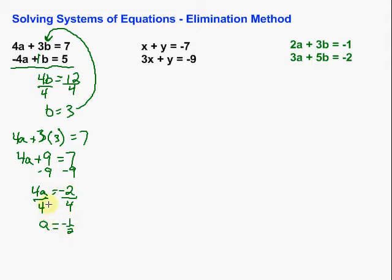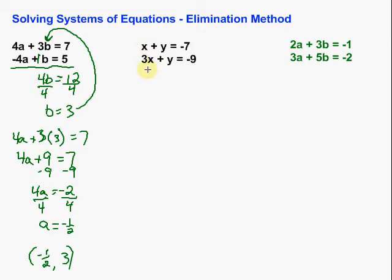Then we've got to get a by itself — it's being multiplied by 4, so we divide by 4 on both sides, and we're left with a equals negative one-half, or negative 0.5. Now, when we have variables other than x and y, we write the solution as an ordered pair in alphabetical order. So rather than x, y, in this case we have a, b — so it would be (negative 1/2, 3). That solution should work in either one of these equations.